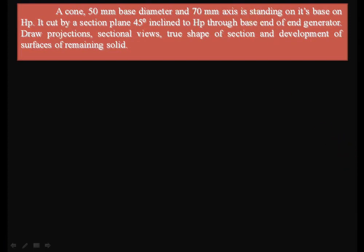Welcome to engineering drawing tutorials. We are going to discuss the sections of a solid. A cone of 50 mm diameter base and 70 mm axis is standing on its base on the horizontal plane (HP). It is cut by a section plane inclined at 45 degrees to the horizontal plane, passing through the base end of the end generator. We need to draw the projections, sectional views, true shape of the section, and development of the surfaces of the remaining solid after cutting.